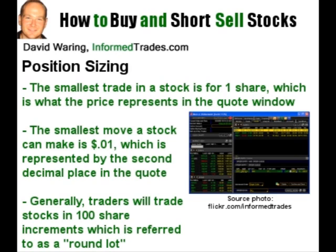Generally, traders trade in 100 share increments when trading stocks, which is referred to as a round lot. It is possible to trade less than 100 shares, referred to as an odd lot, or more than 100 shares that are not in increments of 100, which is referred to as a mixed lot. Depending on where you are trading, there may be additional fees for trading sizes other than 100 share increments, so be sure to check with your broker.